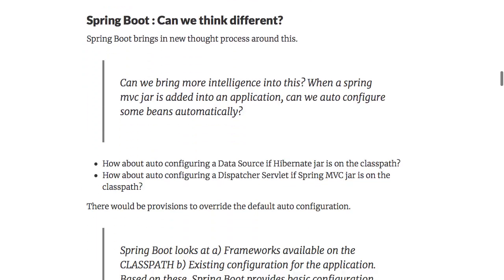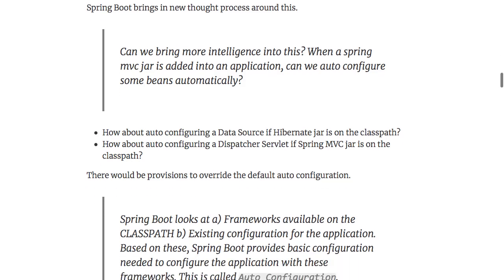Spring Boot came in and said, why don't we think differently about this? Can we bring a lot of intelligence into it? If a Hibernate jar is on the classpath, I know somebody is going to use an entity manager and needs a data source — why don't I go ahead and auto-configure it? If somebody is putting a Spring MVC jar on the classpath, can I directly go and configure a dispatcher servlet?